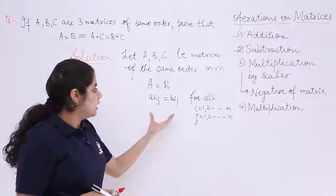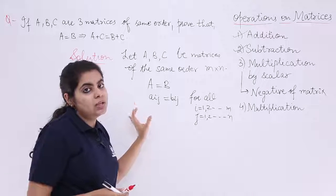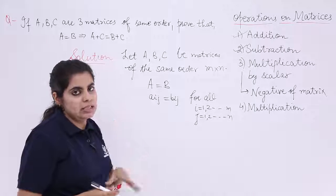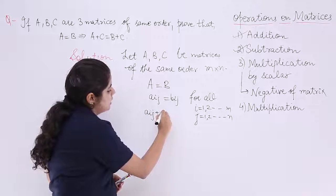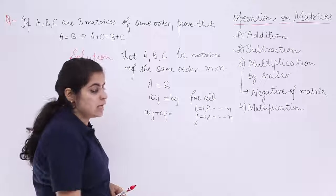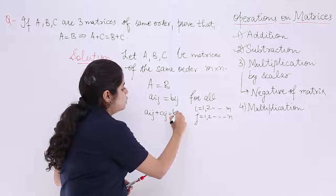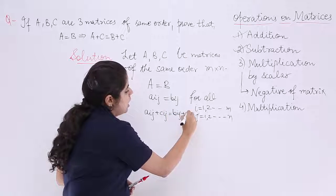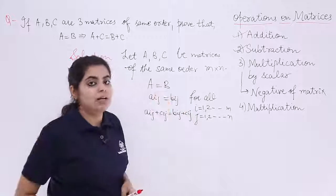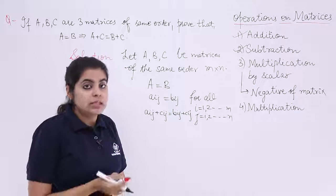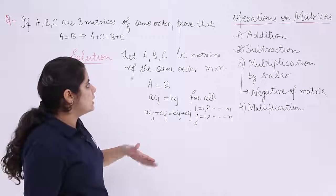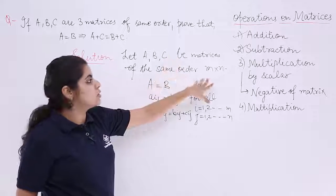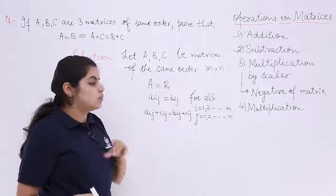Now if I need to add something to the left hand side and to the right hand side. Suppose I need to add a matrix C to the left hand side and also add a matrix C to the right hand side. Is it possible? Yes, because the order has to be same in case of addition and I know in case of C matrix also the order is same. So these both can be added.